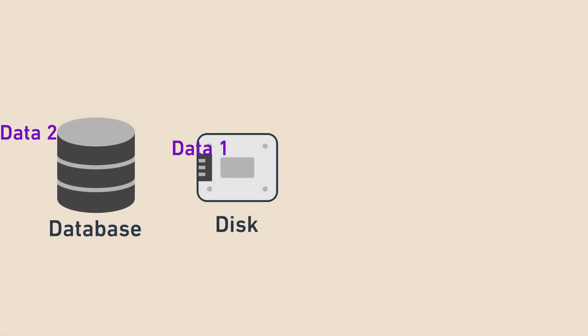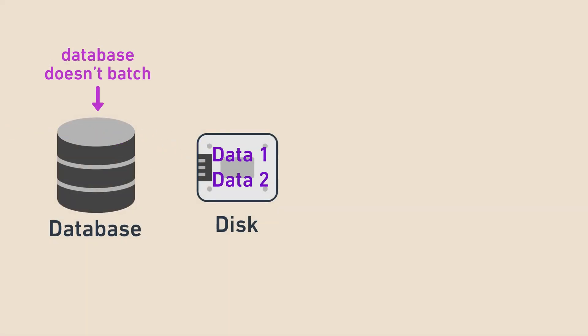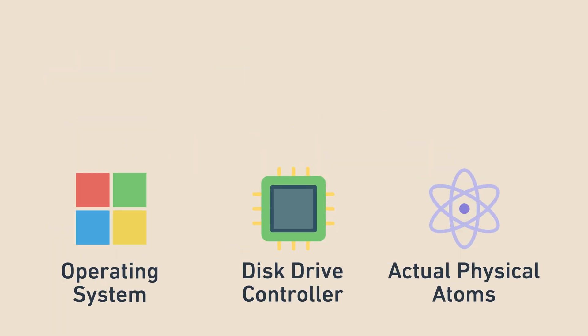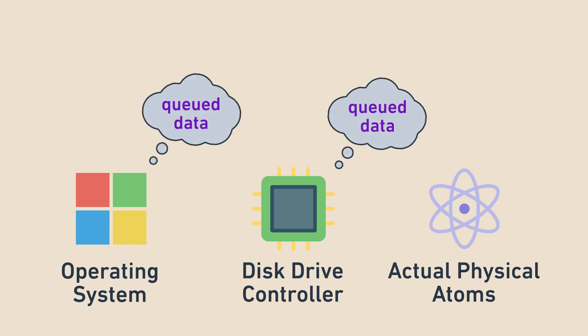If the database doesn't use batching and writes to persistent storage on every request, is it durable? Not quite. Persistent storage actually has three different components: the operating system, the disk drive controller, and the actual physical atoms and electrons used for storage. The operating system and disk drive controller also perform batching for performance improvements. In a power outage, data queued for batching at the operating system or disk layer will also be lost because it didn't make it to the actual atoms and electrons.